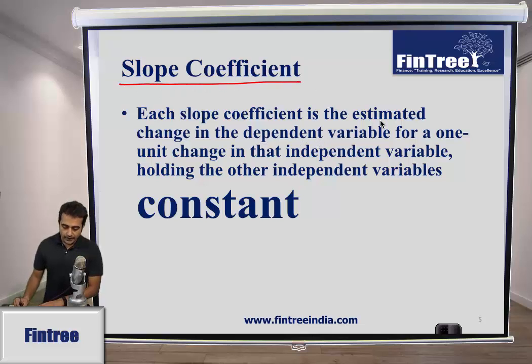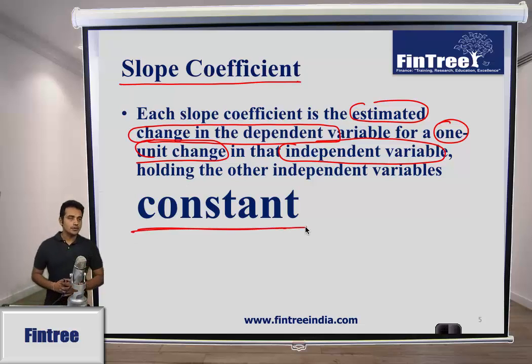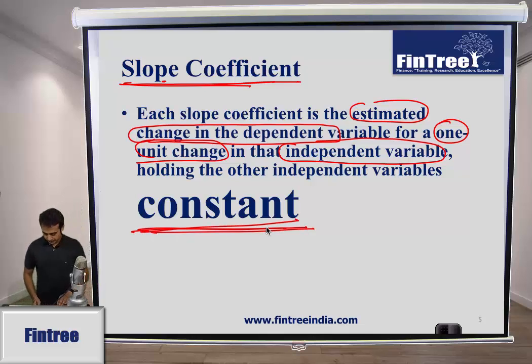Slope coefficient is the estimated change in the dependent variable for one unit change in independent variable, most importantly keeping everything else constant. Because if you allow all the x values to change parallelly, then of course the changes in y variable would be more than that particular slope term. For an example, first you could write this down, but make sure you emphasize the word constant.